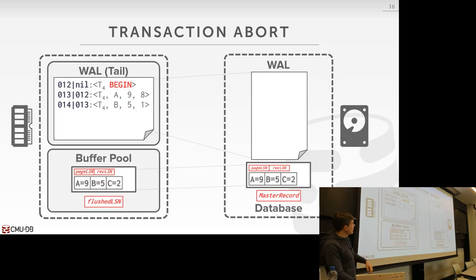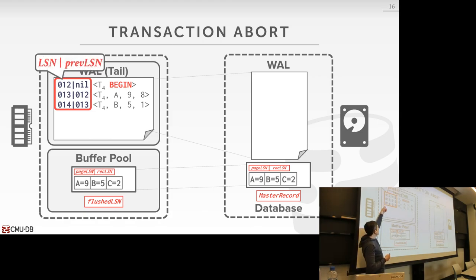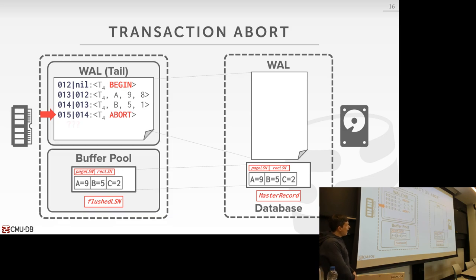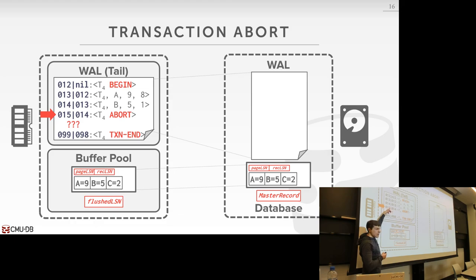We have our simple transaction T4. Now we have the LSN and the previous LSN. For the first log record for transaction T4 — the begin statement — since there's no previous LSN, we just set the previous LSN to null. This transaction runs, makes some changes, but then it aborts. Now what we need to do is reverse those changes and add log entries for these. Once we know all those log entries are durable out on disk, we can then add the transaction end message.